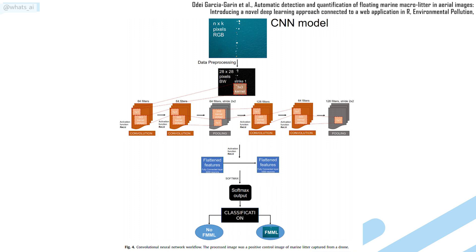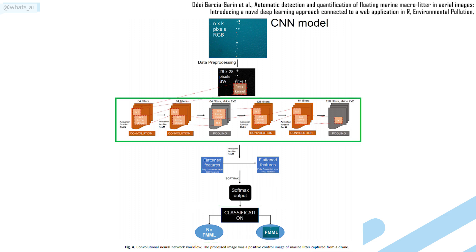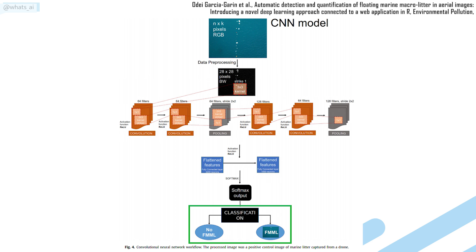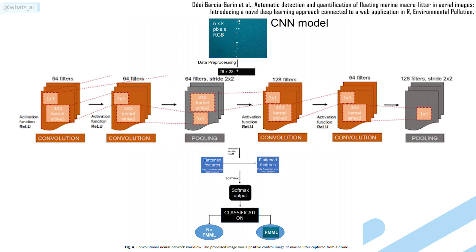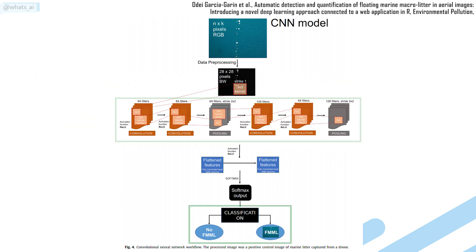In short, their model is a regular binary classifier CNN architecture, composed of convolutions and poolings — terms I explained in the video referenced earlier — that outputs a binary response, telling us if there are FMMLs or not in the picture. The depth of the network is due to these convolution layers compressing the image and creating many feature maps, which are the outputs of the filters, ending with a general representation of the image, allowing us to know, in general, what the image contains.